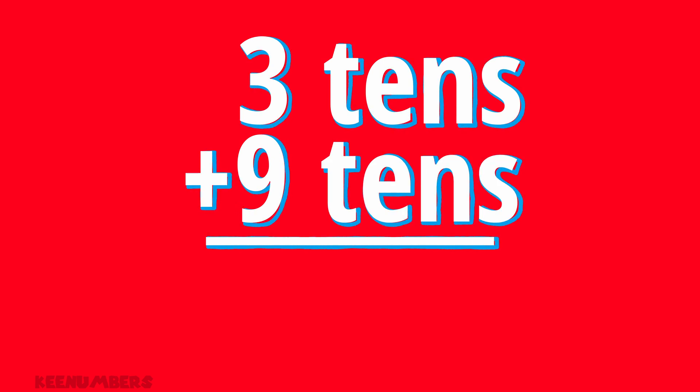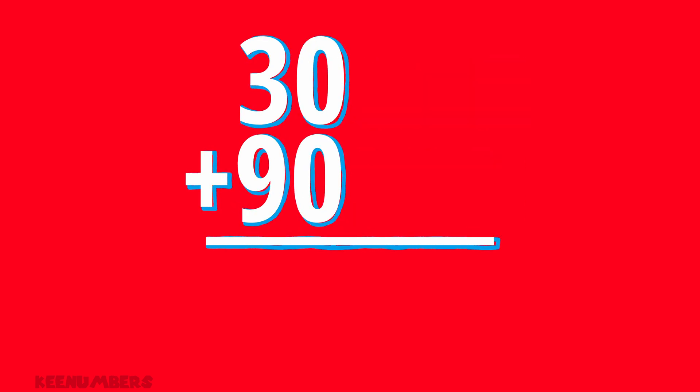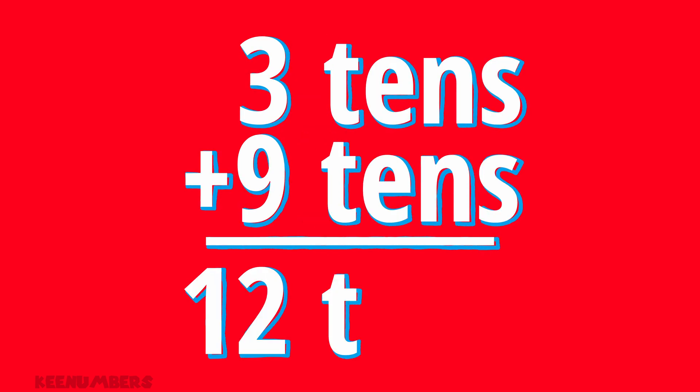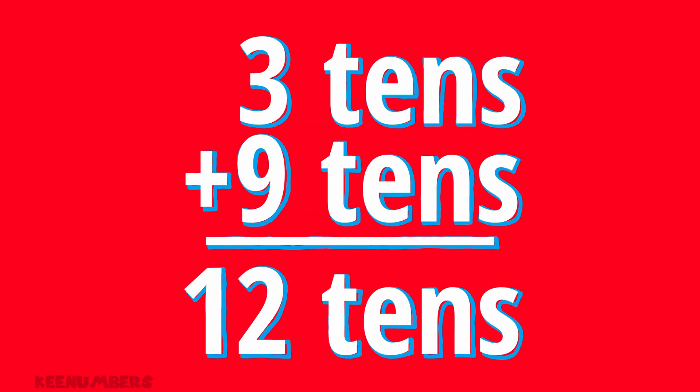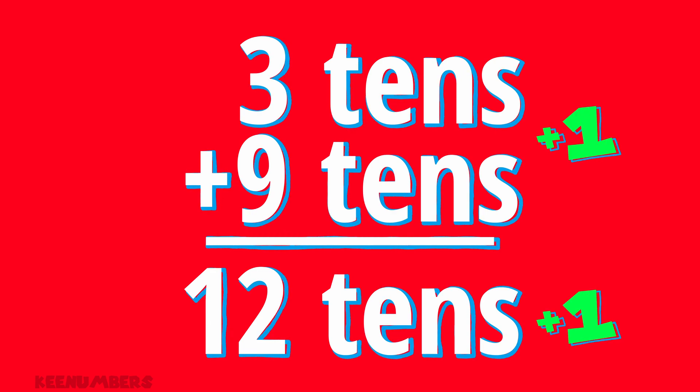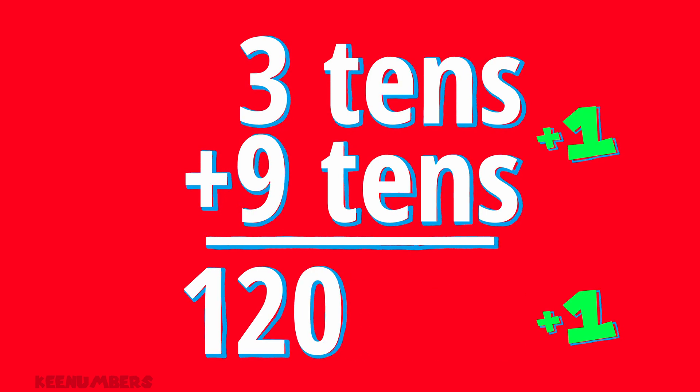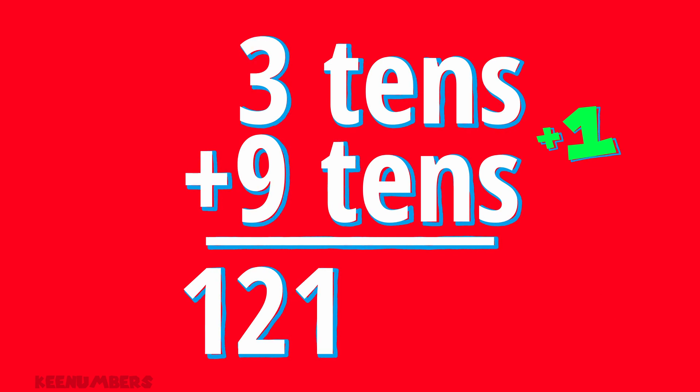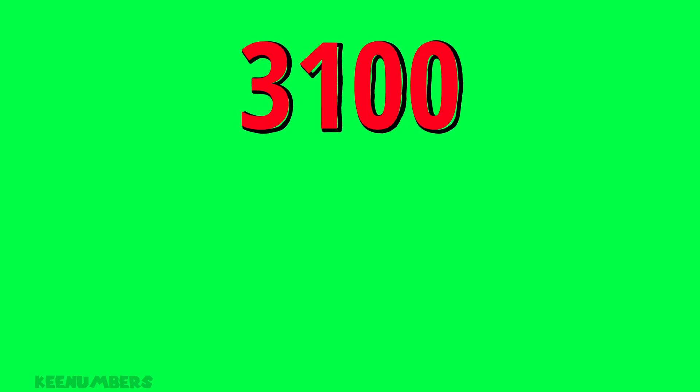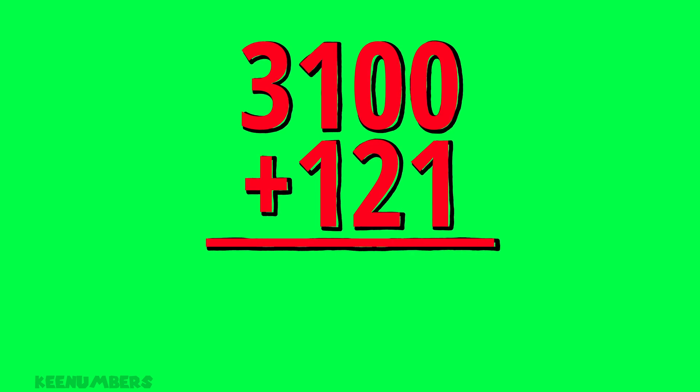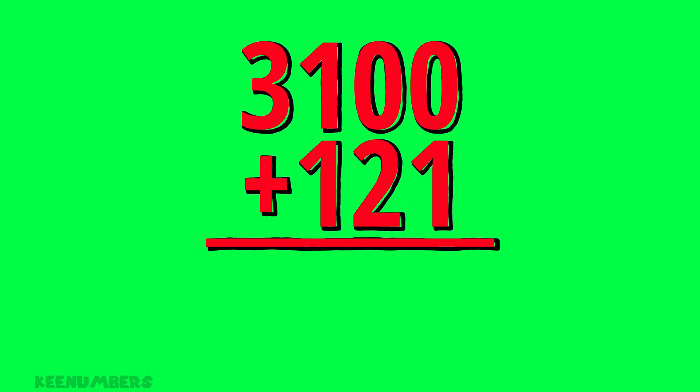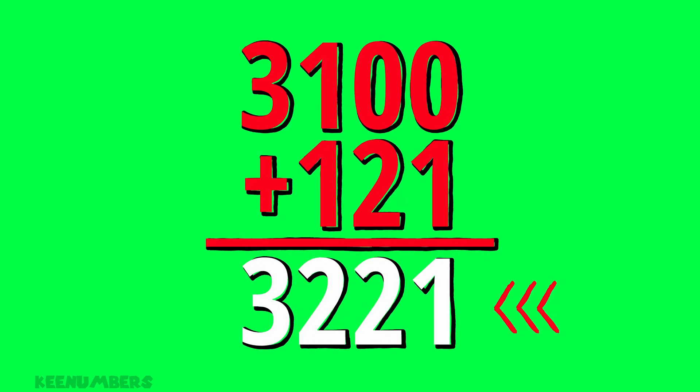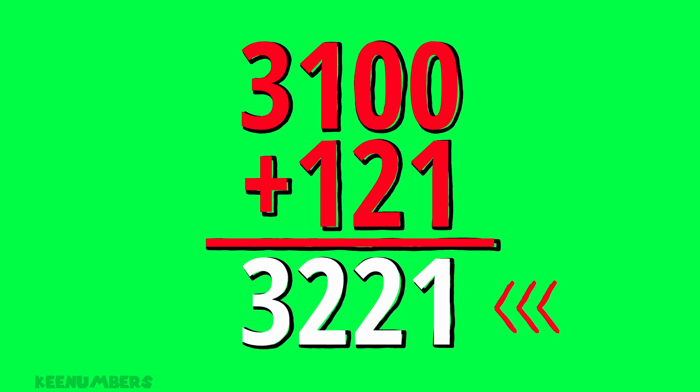Finally, three tens, that is thirty, plus nine tens is twelve tens, and you got to add the one. Twelve tens plus one is one hundred and twenty one. That means we have thirty one hundred plus a hundred and twenty, so three thousand two hundred and twenty one.